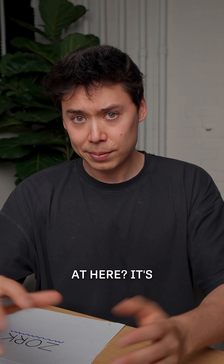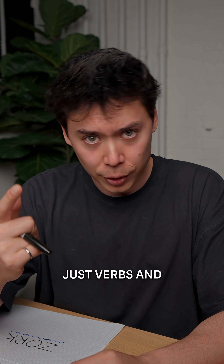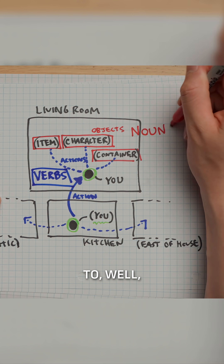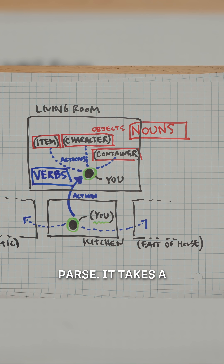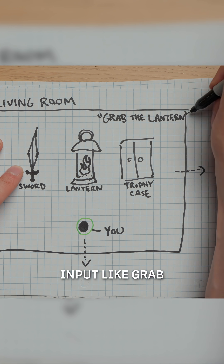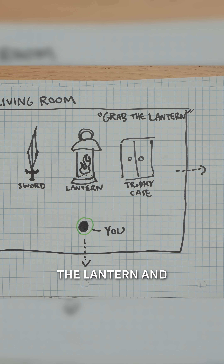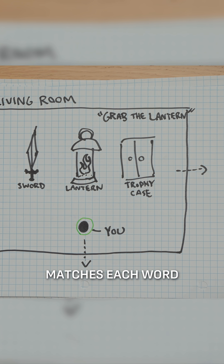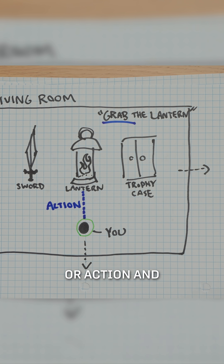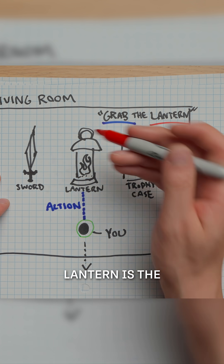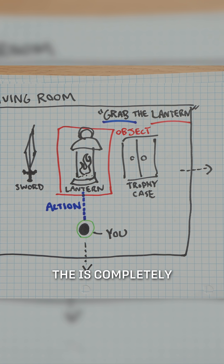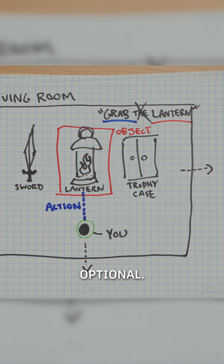See what I'm getting at right here? It's just verbs and nouns. This is how your parser is going to parse. It takes a plain English input, like "grab the lantern," and matches each word to its meaning. Grab is the verb, or action, and lantern is the noun, or object. The is completely optional.